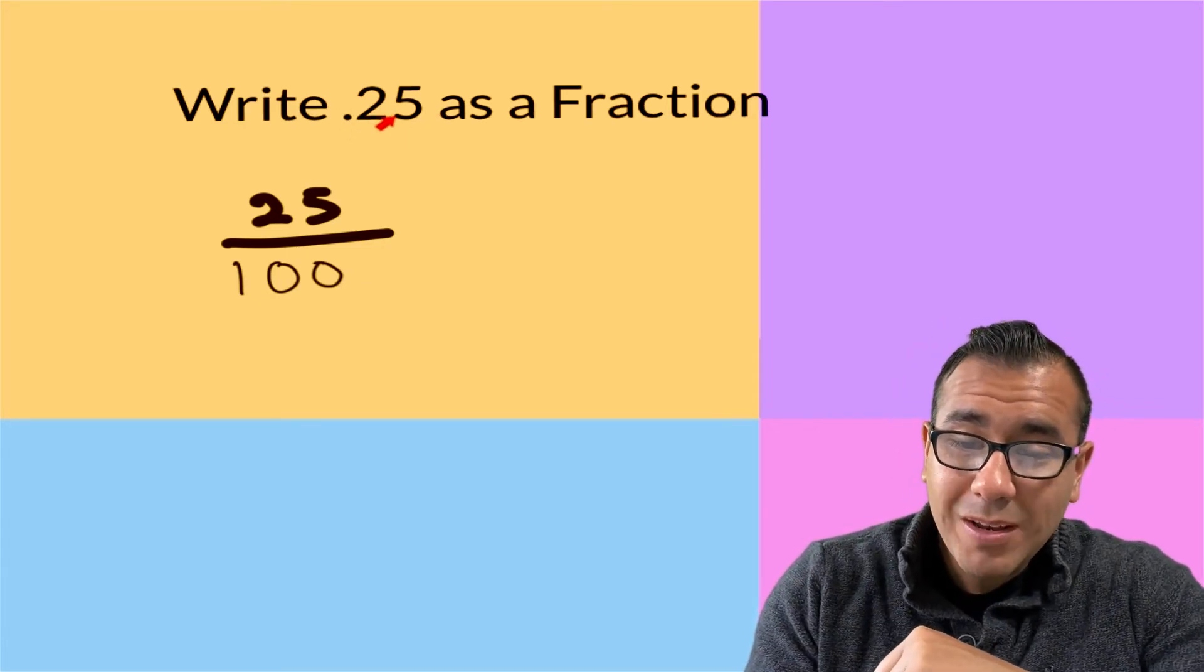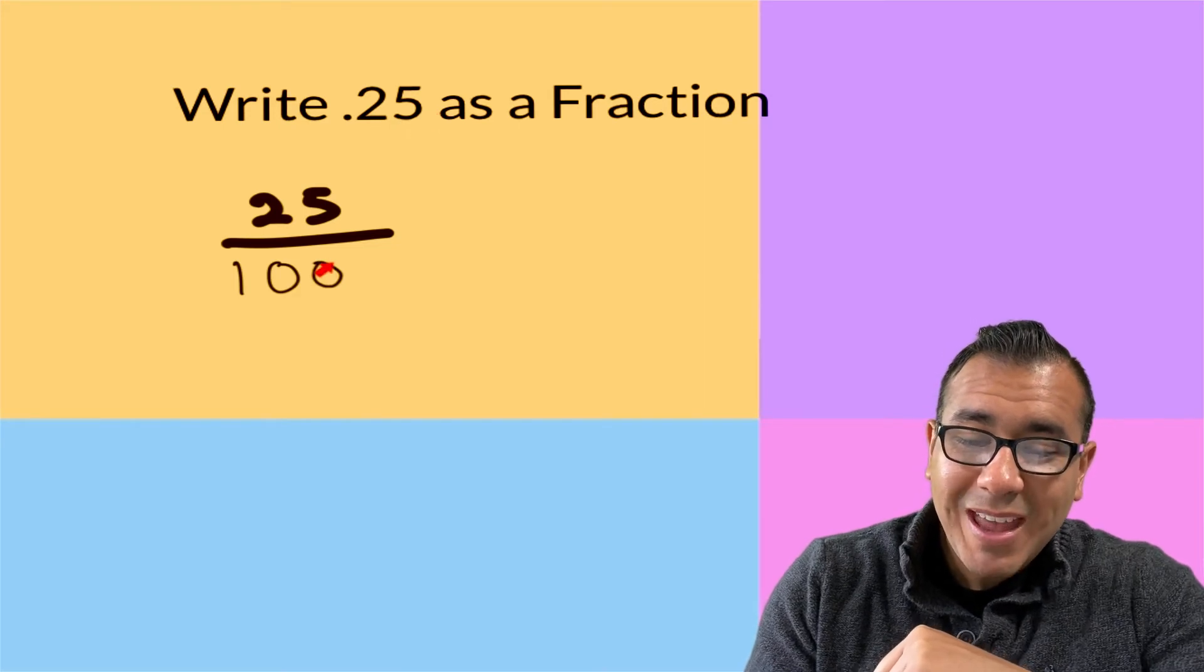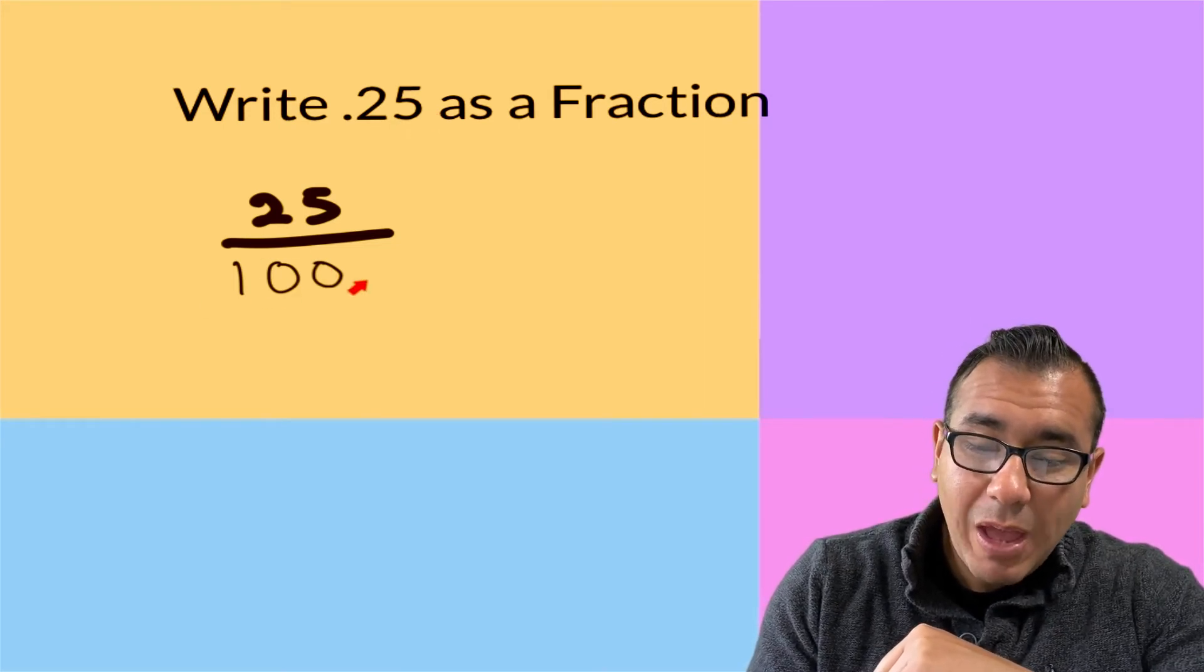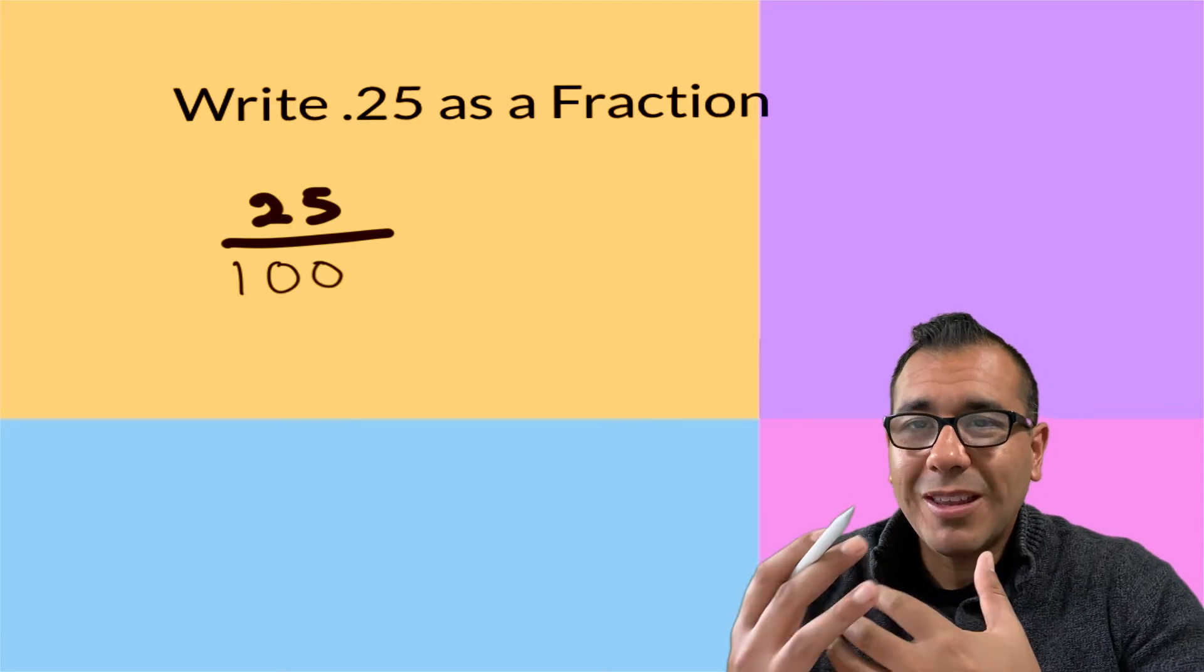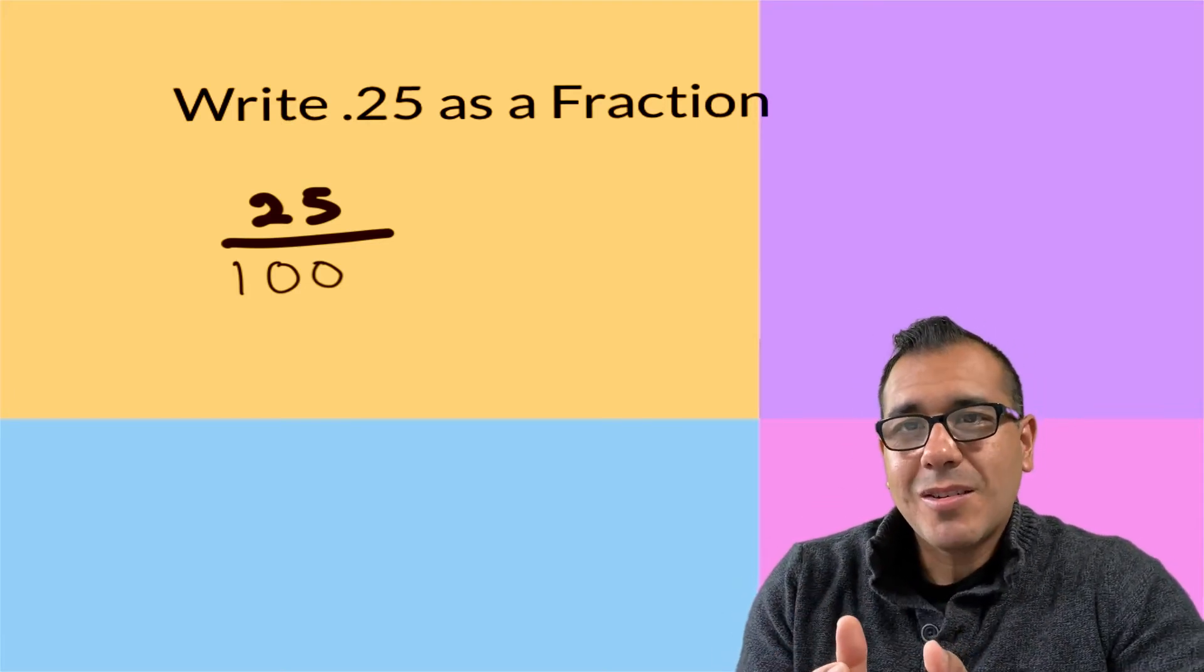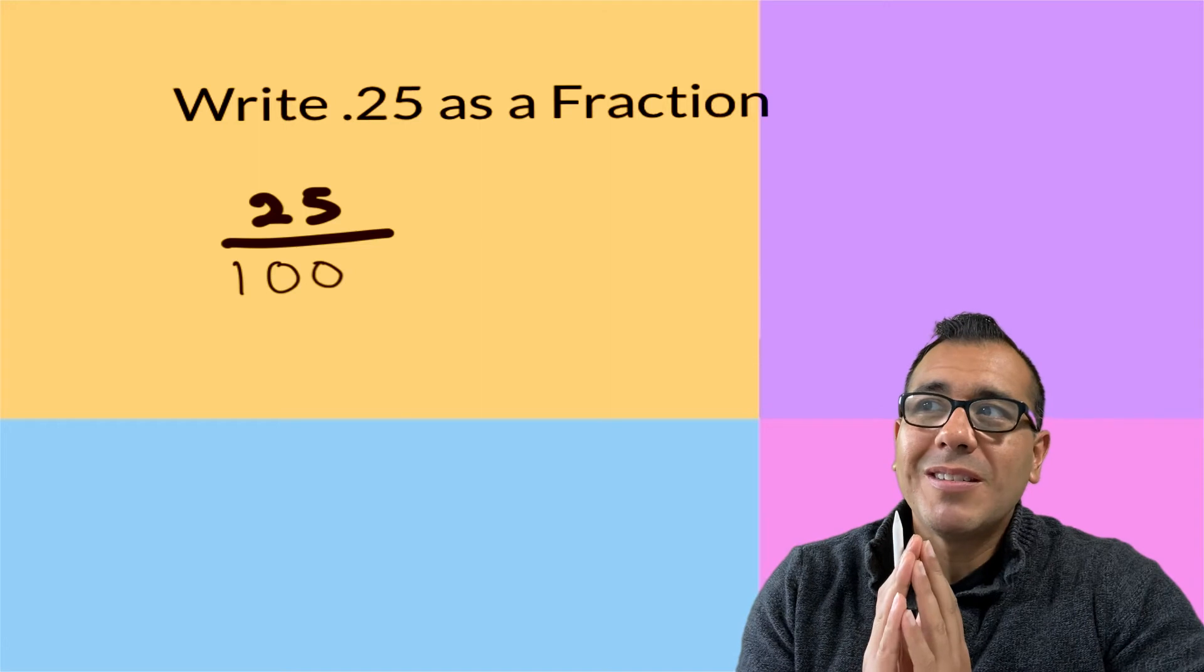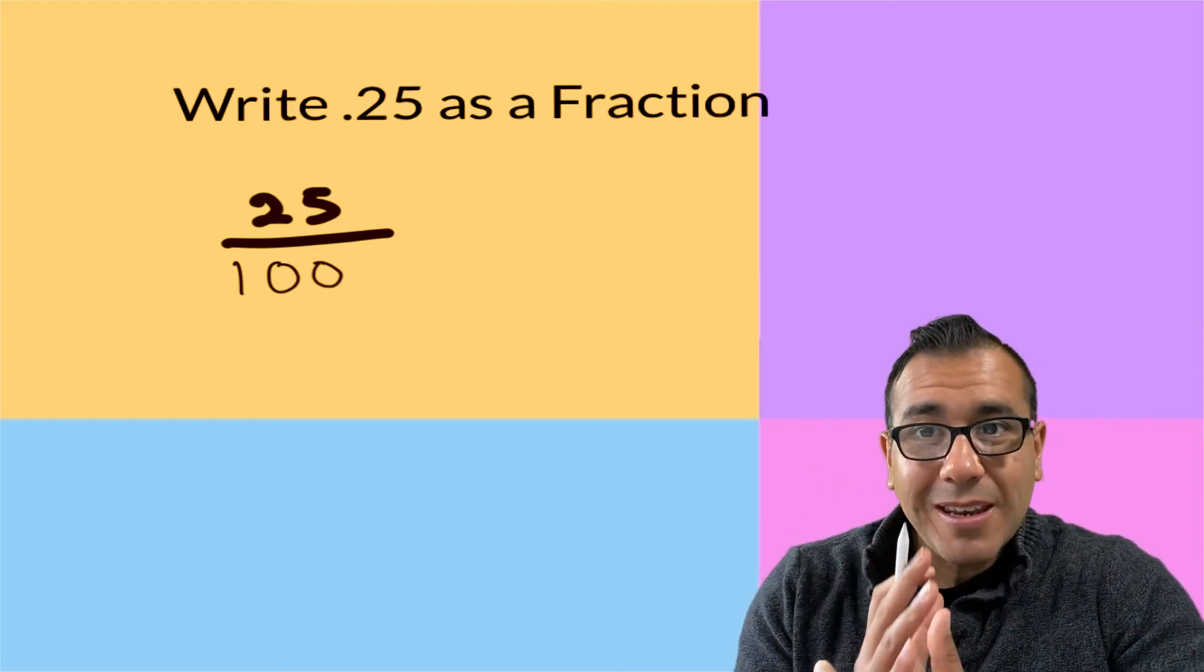So you're going to have a zero for every time you move that decimal place over to the right. So we have one, two zeros, and that's how we get that 100 on the bottom. So again, there's so many different ways of thinking about this. This is just one that I see my students have the easiest time understanding and remembering.